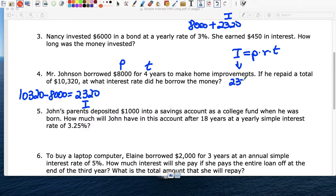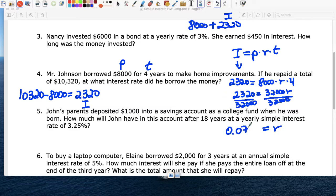So I equals P times R times T. The interest is $2,320. The P was $8,000. The R, I don't know. And the time was four years. So $2,320. $8,000 times 4 is $32,000. R, we're going to divide by $32,000. And R equals $2,320 divided by $32,000 is 0.0725, which you can multiply by 100.